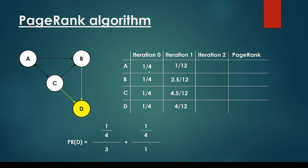As you can see, if we sum up all the page ranks for all the websites in the network we are going to end up with 1 in all of the iterations. 1/4 + 1/4 + 1/4 + 1/4 = 1. And 1/12 + 2.5/12 + 4.5/12 + 4/12 = 1 again. So no matter what iteration we are considering, the sum of the page ranks is going to be 1.